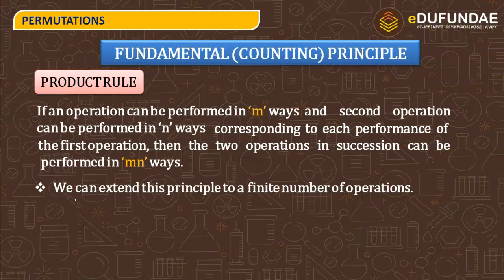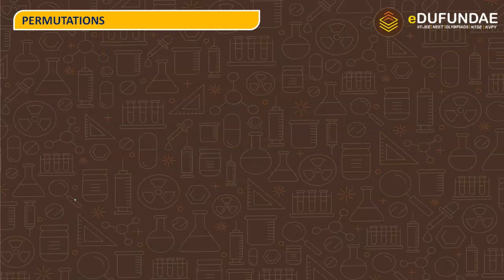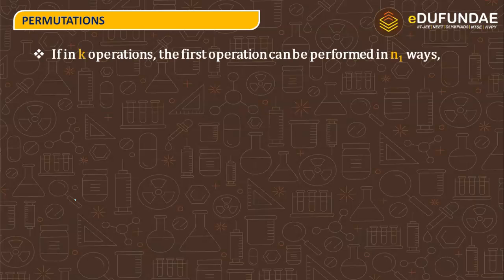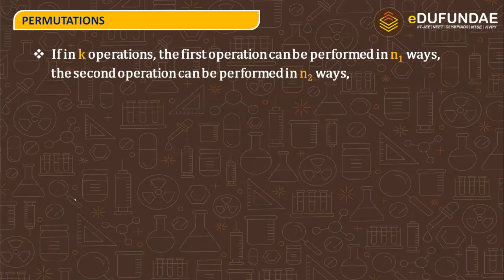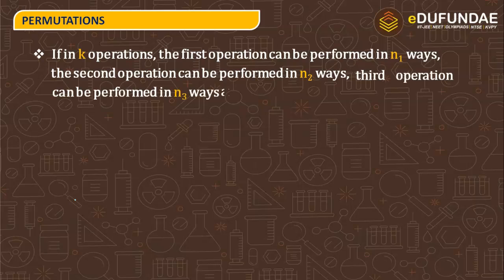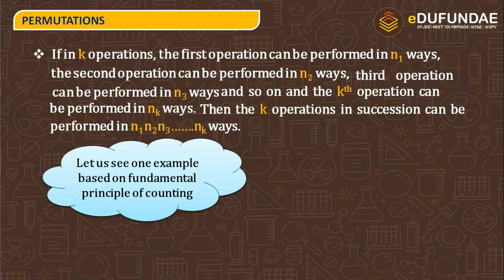We can extend this principle to a finite number of operations. If in K operations, the first operation can be performed in N1 ways, the second in N2 ways, the third in N3 ways, and so on, and the Kth operation can be performed in NK ways, then the K operations in succession can be performed in N1 × N2 × N3 × ... × NK ways.